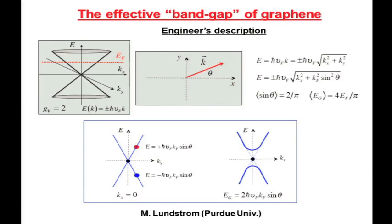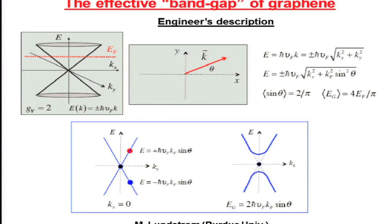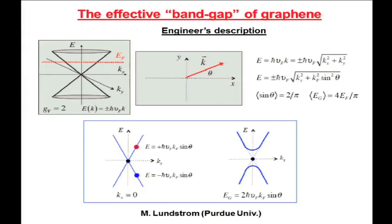A different view that engineers have in describing graphene is actually that of a material with a band gap based on the angular dependence on scattering. This is a trick that electrical engineers and device physicists use to apply all the developed theories for conventional semiconductors to graphene. You consider that you have a valence and conduction band with an effective gap.